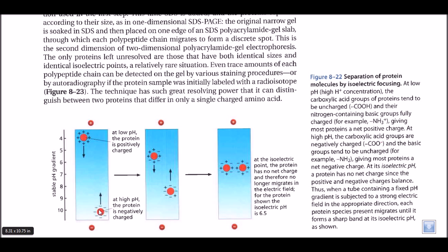At the isoelectric pH, both the N-terminal and C-terminal interact in such a way that the overall charge of the protein molecule becomes zero. The net charge of a protein molecule becomes zero at its isoelectric pH — this is called the isoelectric pH for a protein, or pI (isoelectric point).